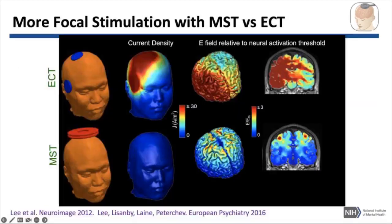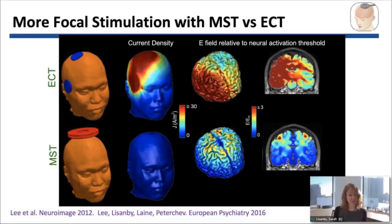Here is more detail about just how focal the stimulation can be with MST on the bottom row and ECT on the top row. You can see that we can really focus the electric field in superficial cortex. And even though these intensities are much lower than what we get with ECT, what we're showing is an intensity that was adequate to induce seizures reliably.